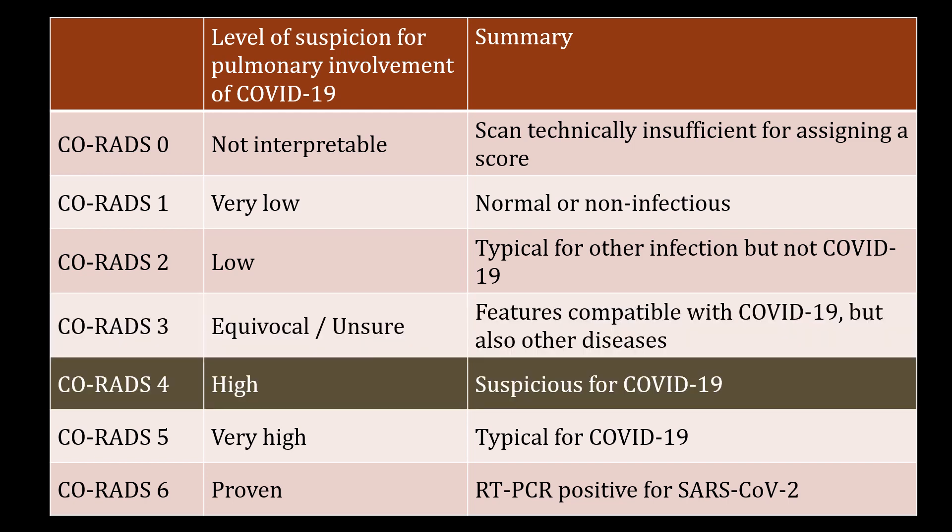CORADS-4 implies a high level of suspicion for pulmonary involvement by COVID-19 based on CT findings that are typical but showing some overlap with other viral pneumonias. Findings are similar to CORADS-5 but are not located in contact with visceral pleura or are located strictly unilaterally, are in a predominant peribronchovascular distribution, or are superimposed on severe diffuse pre-existing pulmonary abnormalities.